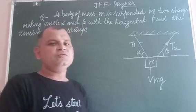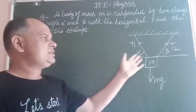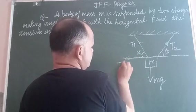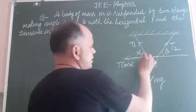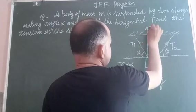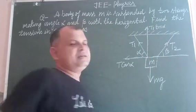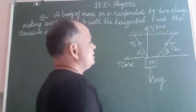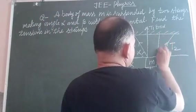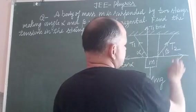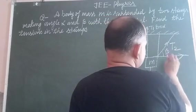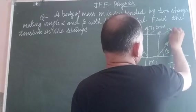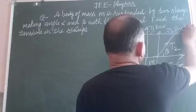Now we resolve the forces on one side and another side. We resolve this T1 force: this is T1 cos alpha in horizontal side and T1 sin alpha in vertical side. Now we resolve this as T2 cos beta and this is T2 sin beta.